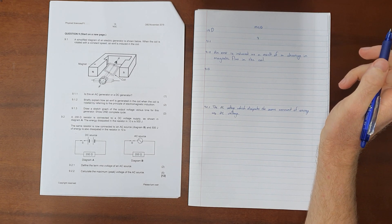Question 9 in this physics paper is always related to machines and alternating current. Question 9 reads: a simplified diagram of an electric generator is shown below. When the coil is rotated at constant speed, an EMF is induced in the coil. Question 9.1.1: Is this an AC or DC generator? The only way to answer is to look at how the internal and